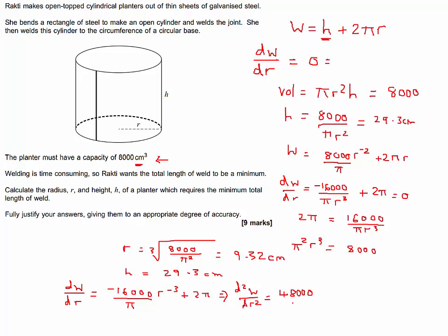Reduce the power of R, so minus 3 minus 1 gives us minus 4. But I'm going to bring it back down the bottom again and write it as R to the power of 4 in the denominator. And then 2 pi is a constant, so that differentiates to zero.